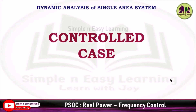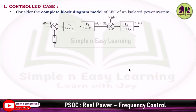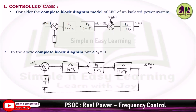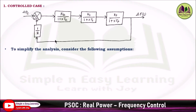Second case — the controlled case. Consider the complete block diagram and assume del PD equal to 0. Substituting del PD equal to 0, the block diagram is reduced and rearranged. Using block diagram reduction technique and the same assumptions Tt equals Tg equals 0 and Kg times Kt equals 1, the block diagram is further reduced.